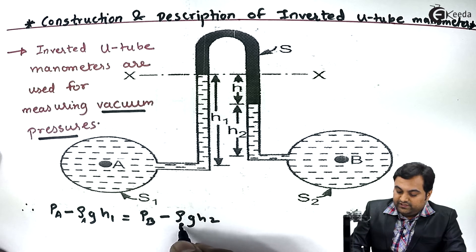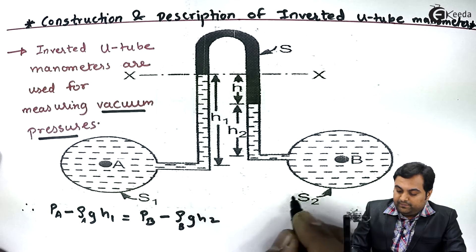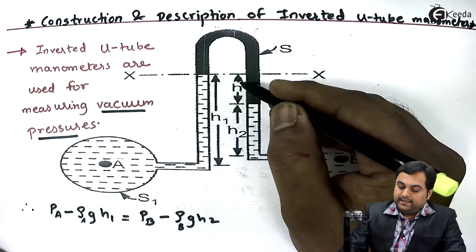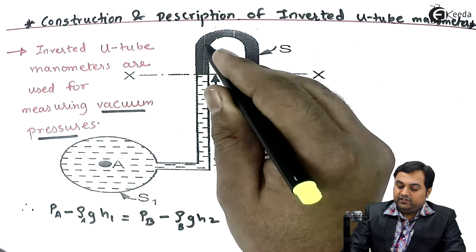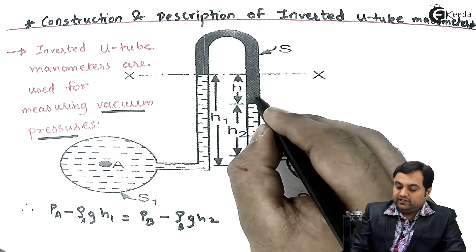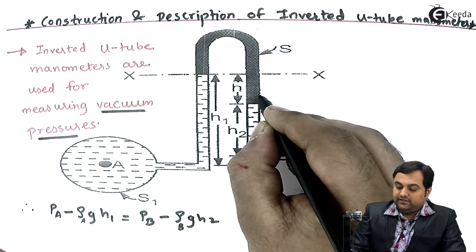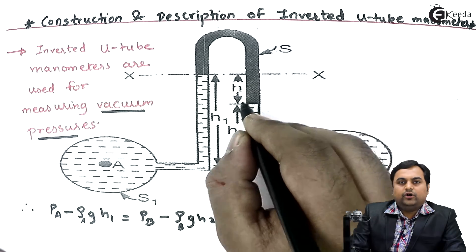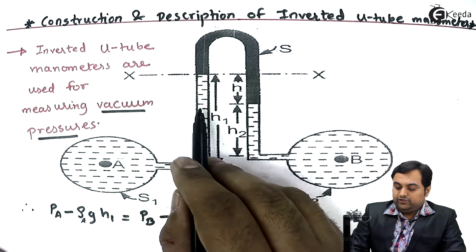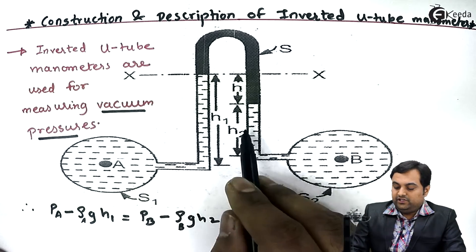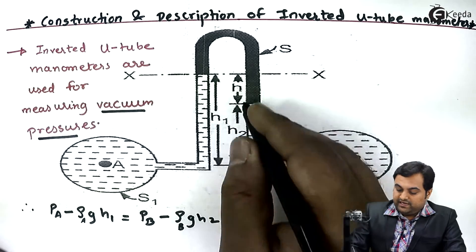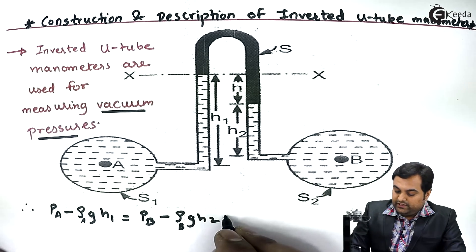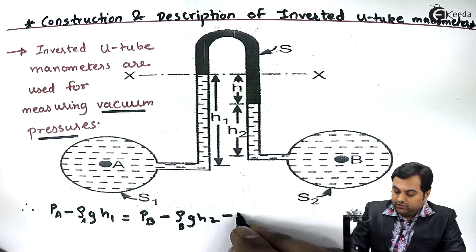The density here is for the fluid in pipeline B. h is the height of the heavier liquid. This heavier liquid would be either mercury or any liquid which is given, but it should be heavier than the liquid in the pipeline. So its height is h, and I'll write down minus rho × g × h.